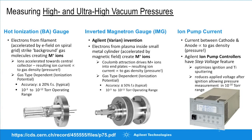If using a sputter ion pump, the current between the anode and cathode is directly proportional to gas density or pressure inside the pump. Agilent controllers use a step voltage feature — a very high potential creates the plasma discharge, then once stable, voltage is reduced to the minimum level possible. This reduces leakage current, improves measurement accuracy, and allows the ion pump controller itself to measure pressures down to the 10⁻¹⁰ torr range.